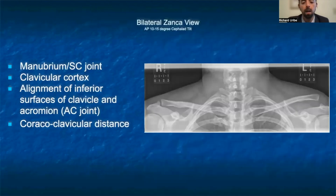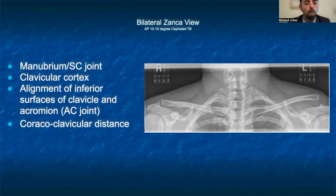The second common view we will discuss is the bilateral Zanca view, which is an anterior-posterior projection with a 10 to 15 degree cephalic tilt, best at assessing the acromioclavicular joint. One additional important landmark to note is the coracoclavicular distance, which helps us understand the integrity of the coracoclavicular ligament. A normal value is between 1.1 and 1.3 centimeters.